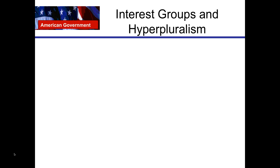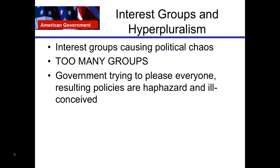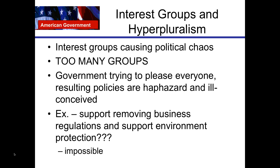Now let's look at hyperpluralism. Interest groups cause political chaos under the hyperpluralistic theory — there are just too many groups. The government is trying to please everyone, and this results in policies that are haphazard and ill-conceived. For example, supporting removing business regulations and supporting environmental protection at the same time is very difficult. It's going to be very hard to satisfy the environmental lobby and the business lobby at the same time, and this creates either haphazard, ill-conceived policies or sometimes gridlock as well.